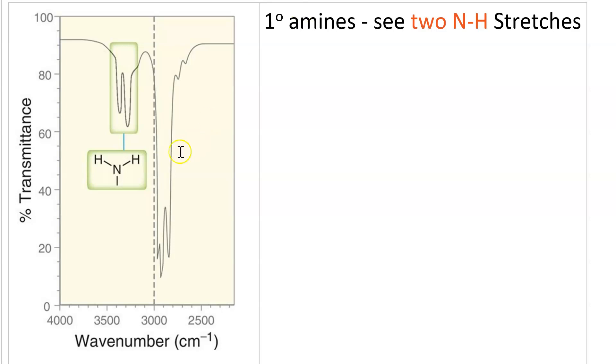In a primary amine, where the nitrogen is bonded to two hydrogens, we see two NH stretches. So you'd probably assume that one of these corresponds to one of these peaks, and the other one corresponds to the other peak. That's actually not quite right.